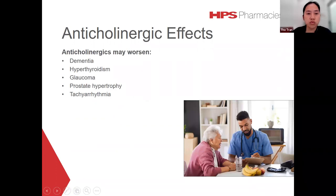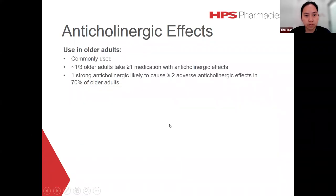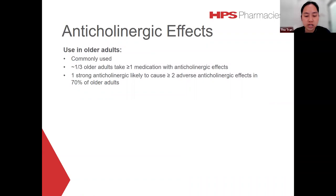Anticholinergics can worsen a range of conditions such as dementia, hyperthyroidism, glaucoma, prostate hypertrophy, and tachyarrhythmia — conditions that tend to be quite prevalent in older populations. The use of anticholinergics is common in Australia, with up to one third of patients aged over 60 years taking at least one medication with anticholinergic effects. Studies suggest that taking one medication with strong anticholinergic effects is likely to cause at least two anticholinergic adverse effects in over 70 percent of older patients.